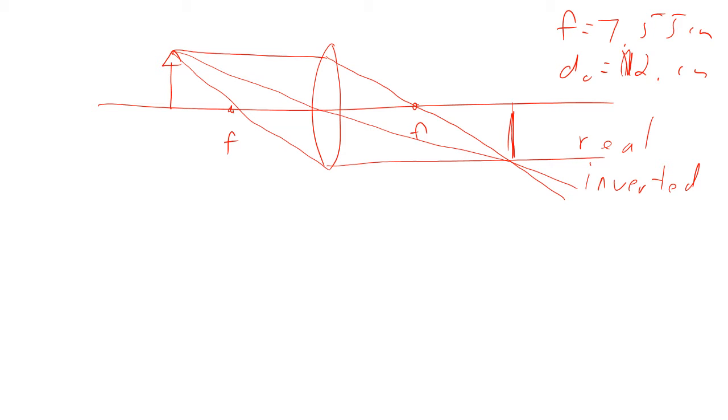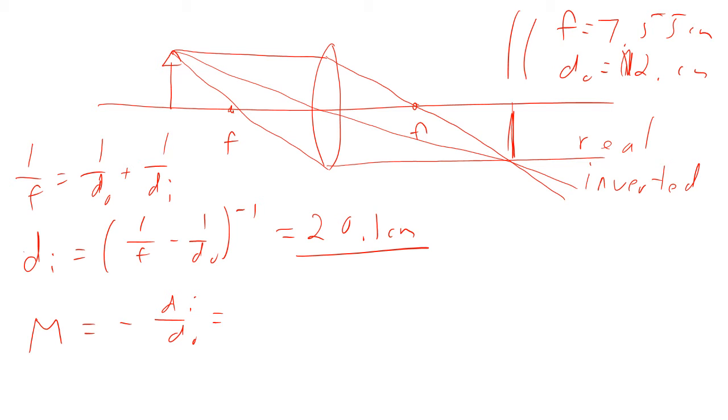So mathematically, let's do this. So 1 over f equals 1 over do plus 1 over di. So we do a little algebra here. Di equals 1 over f minus 1 over do to the minus 1. If we plug in the numbers that we had up here, that gives us an image distance of 20.1 centimeters. So positive number here means it is in fact a real image. And real images are inverted. We know it's also inverted because the magnification is minus di over do. And so the magnification turns out to be minus 1.66 times. The minus means it's inverted. The 1.66 is bigger than 1, so that means it's enlarged.